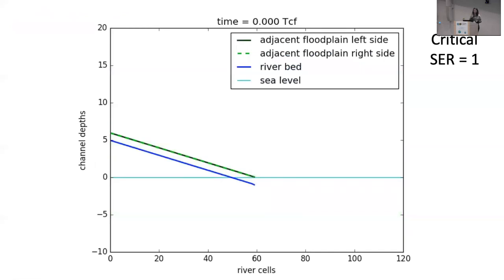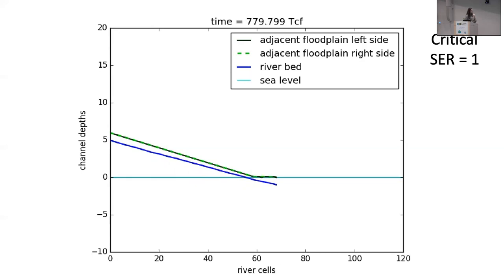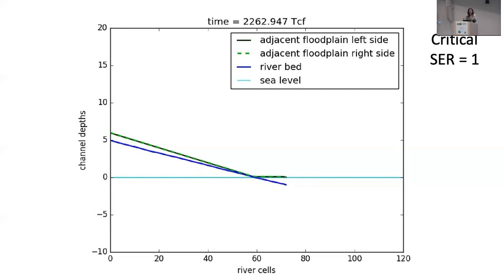Now I'll show you a profile view that follows the river course. Here, 10 river cells is equivalent to one backwater length. The blue line follows the riverbed elevation, the green lines are the adjacent floodplain cell elevations, and in this case the critical superelevation to trigger an avulsion is 1. This is with no sea level rise or base level rise. As the channel is prograding, the riverbed is aggrading and the blue line gets closer to the green lines, meaning the superelevation ratio is getting closer to 1. Once that ratio is met and a new steepest descent course to sea level is determined, the avulsion occurs. As the channel shortens and steepens, that wave of channel degradation migrates upstream.